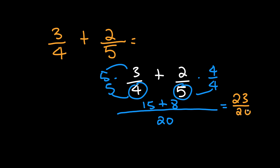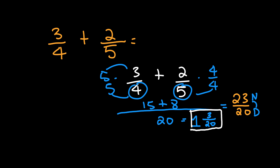Whenever the denominator is smaller than the numerator, we can simplify. Twenty goes into twenty-three one time, and we have a remainder of three, so we put that three over twenty. Our final answer is one and three over twenty.